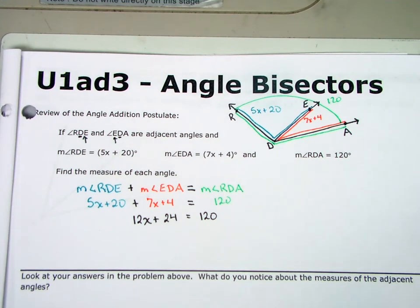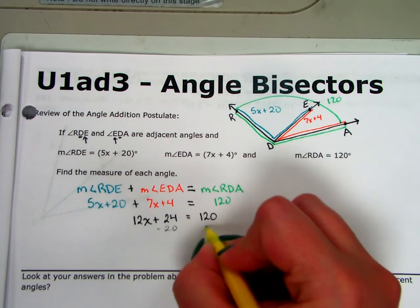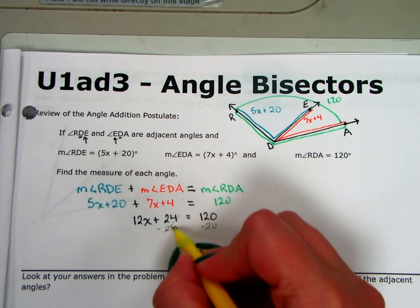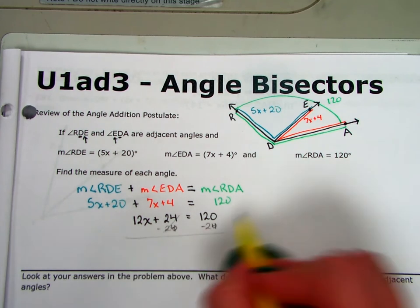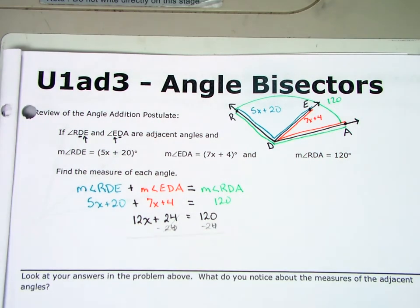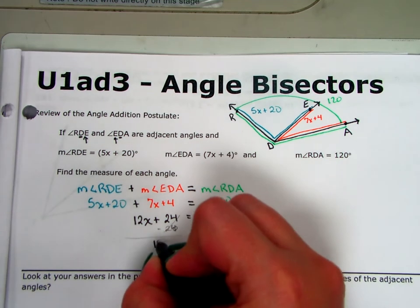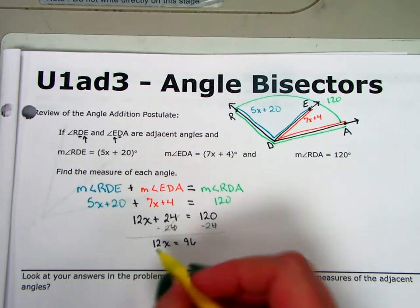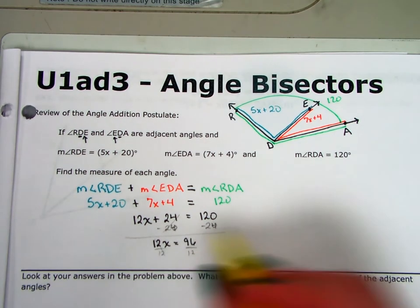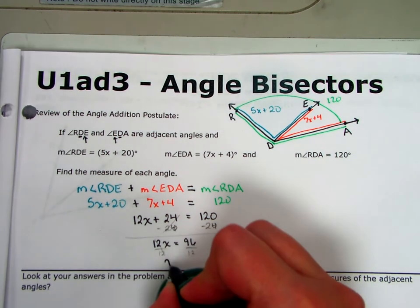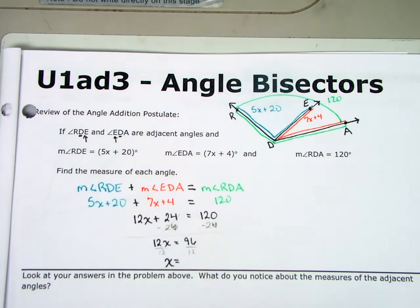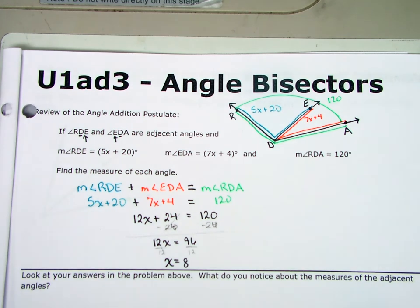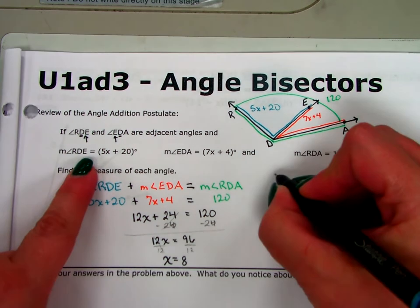Now I use the subtraction property of equality and subtract 24 from both sides, giving me 12x equals 96. Then I divide both sides by 12, and x equals 8. If I'm not sure I did my math right, that's okay — because the problem says to find the measure of each angle, so we can check our work.